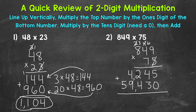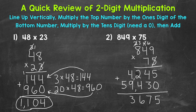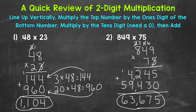At this point we are ready to add our partial products to get our final product. Starting with the ones place and working left: 5 plus 0 is 5; 4 plus 3 is 7; 2 plus 4 is 6; 4 plus 9 is 13 — put a 3 and carry the 1; 1 plus 5 is 6. Our final answer is 63,675.